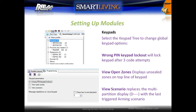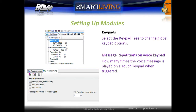Select the Keypads tree to change global options for the keypads. Wrong Pin Keypad Lockout will lock keypads after three failed attempts to enter a code. View Open Zones displays unsealed zones at the top of the keypad, and View Scenarios replaces the multi-partition arming status with a single arming scenario. The Message Repetitions option is for touchscreen keypads and adjusts how many times a voice message is played.